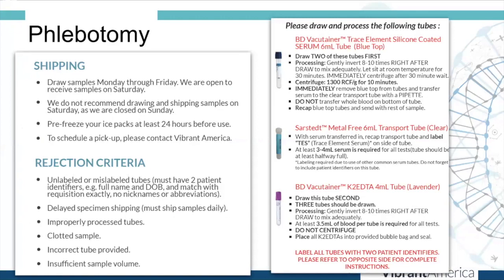Phlebotomy for the micronutrient test is a little different than the rest of our wellness testing — it's not the same as just the EDTA or SST tube, and it does require special handling. Please make sure you download the specimen collection and handling form, and ensure that whoever is drawing blood is drawing the right tubes and sending them correctly. This test has a shorter sample stability — generally about two days — so we do not recommend drawing on a Saturday, as we're closed Sunday and the sample stability may have passed by Monday. Only draw samples for micronutrient tests Monday through Friday.